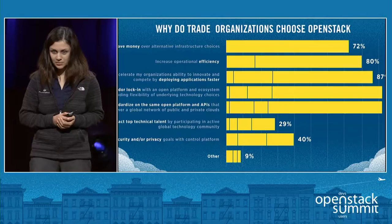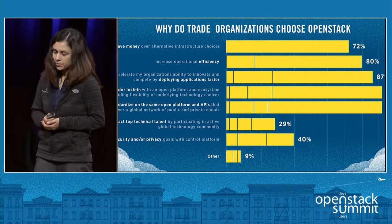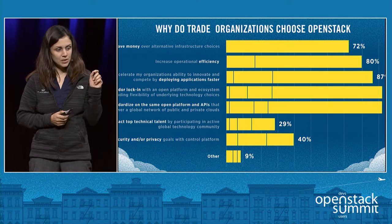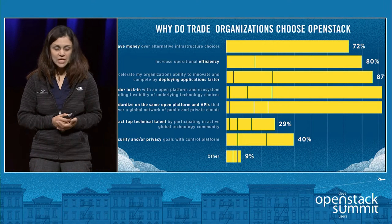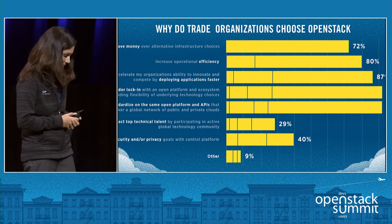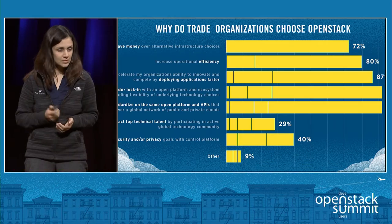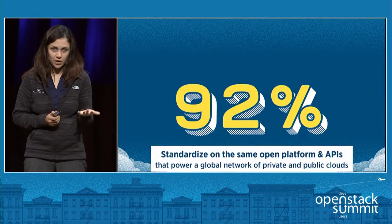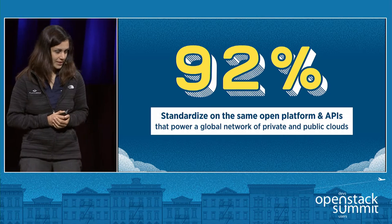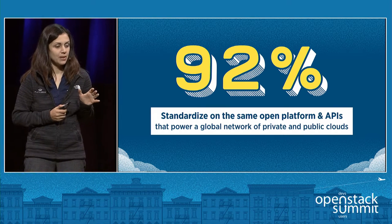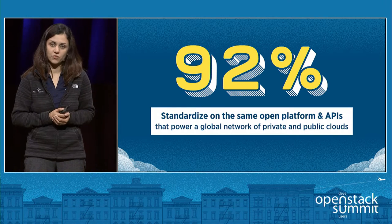I'd like to take this conversation one step further. To do that, I want to present a question that was asked as part of the most recent OpenStack user survey. The OpenStack Foundation runs a popular user survey about twice a year. The most recent survey was run about a month ago, and one of the questions asked was: what are the top business drivers for OpenStack, or why do organizations choose OpenStack? About 92% of responders stated this as one of the top reasons. It says: standardized on the same open platform and APIs that power a global network of private and public clouds.